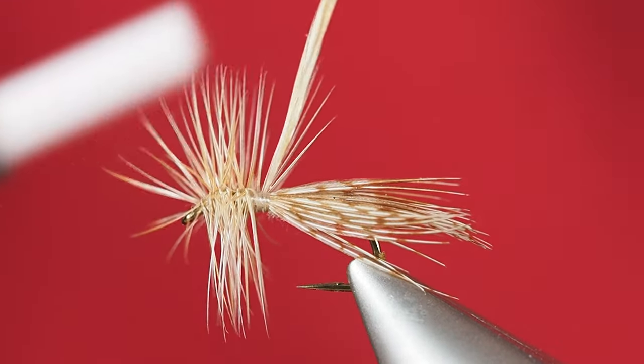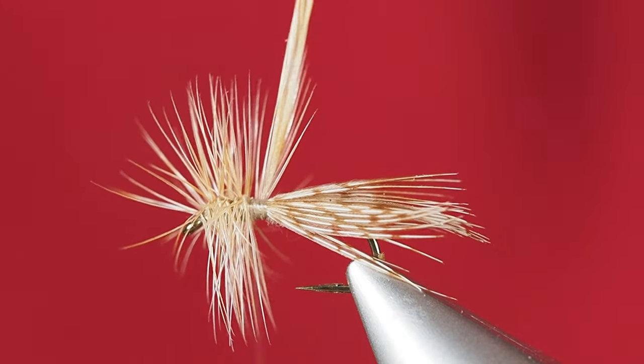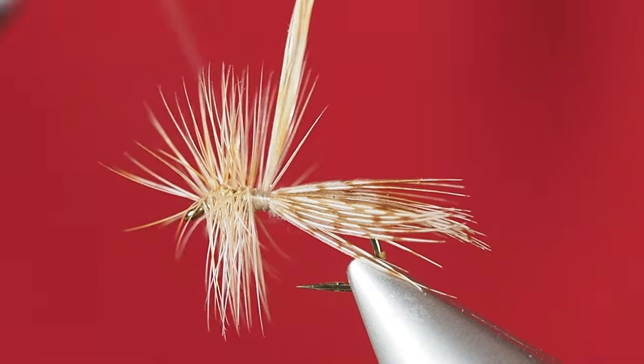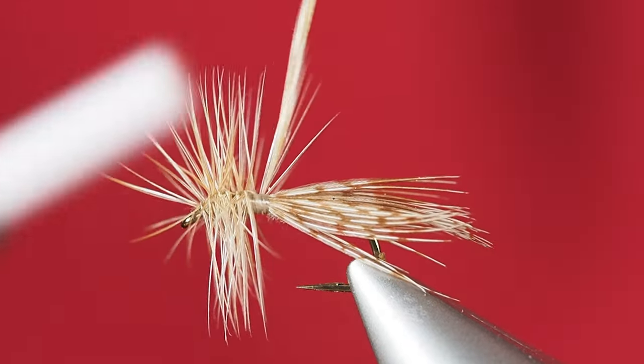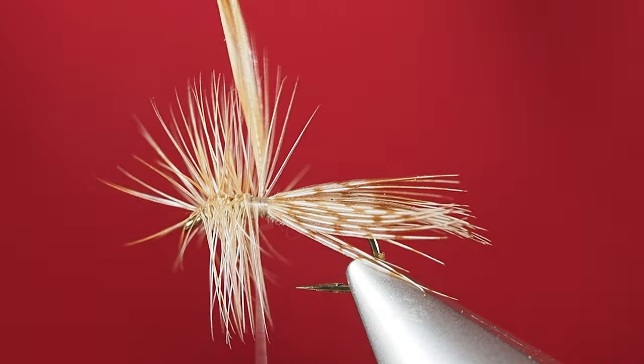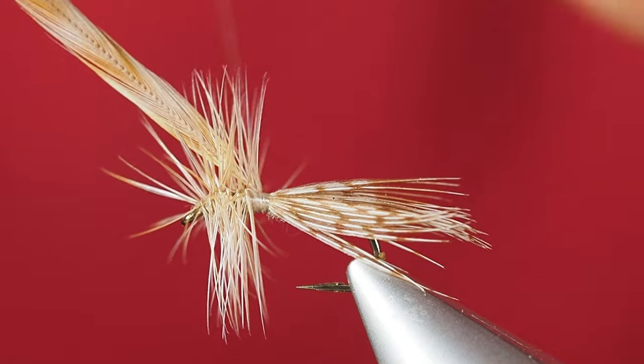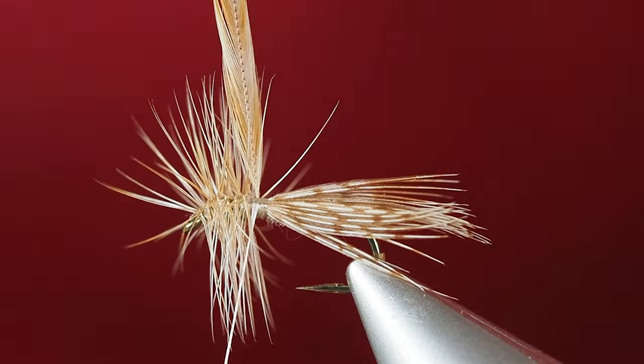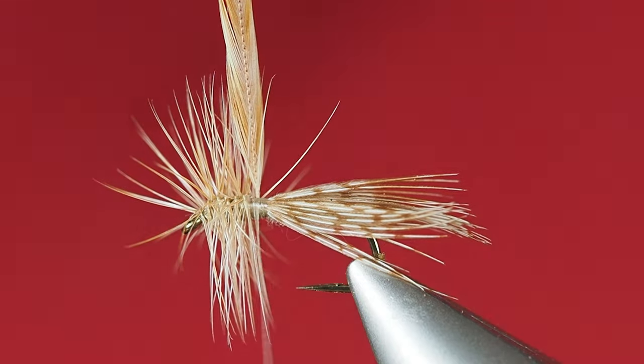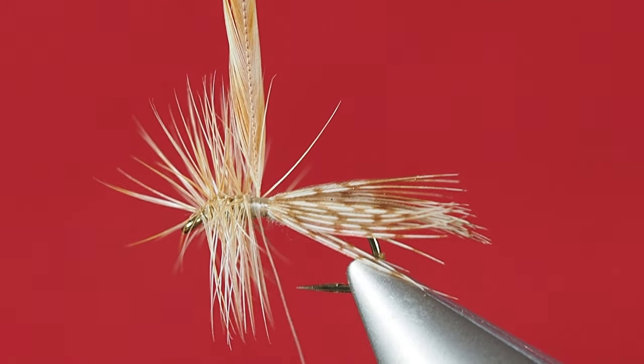So now I'm going to secure my hackle back here. I'm going to kind of jiggle my thread back and forth—that just helps me keep from trapping too many of these hackle fibers. I'll take a couple wraps over the top so that's secure. Me being a little OCD, I'll take another wrap kind of behind it as well. Then I can just go ahead and release that hackle from my hackle pliers and put those away so I can find them next time I'm tying.